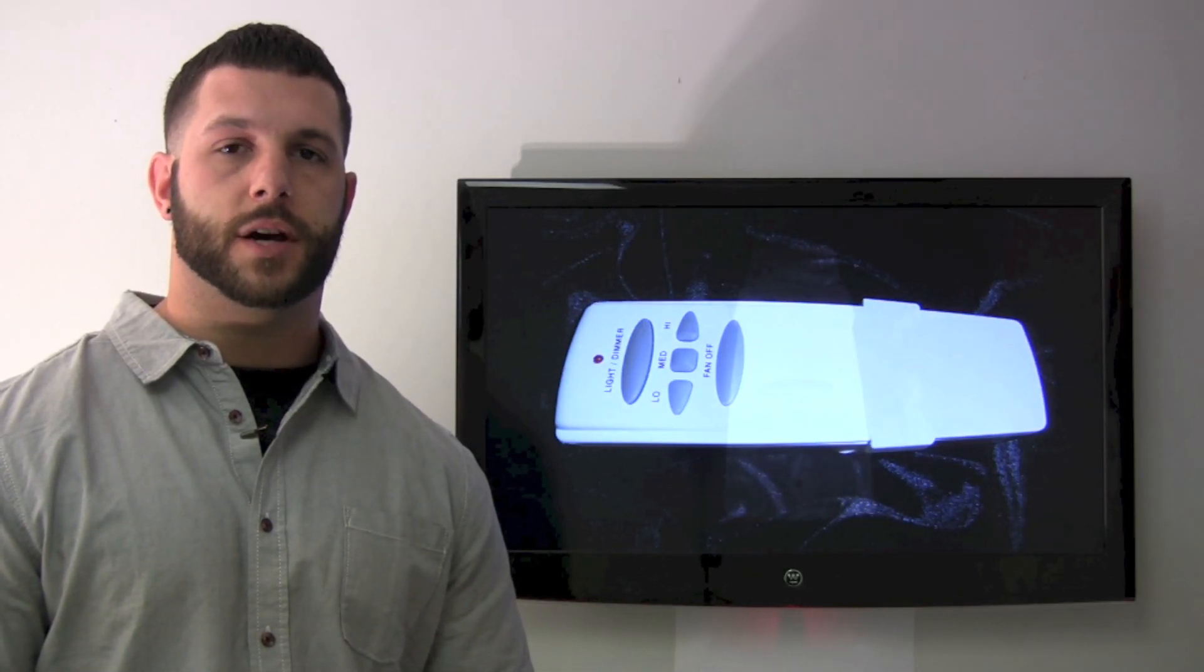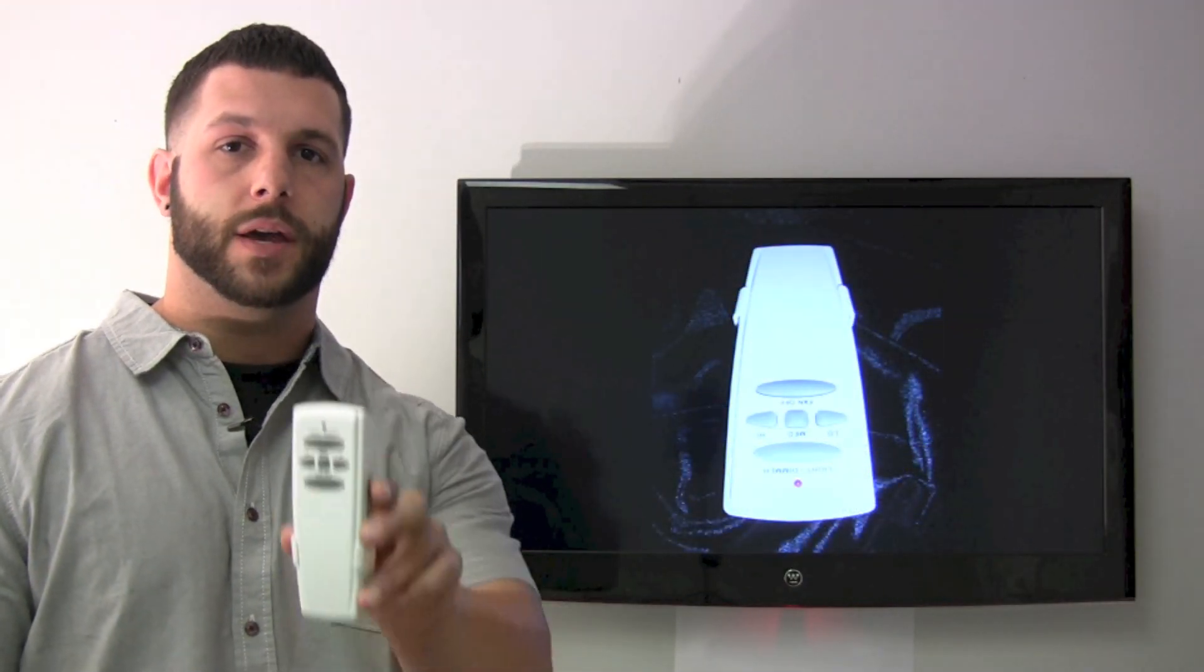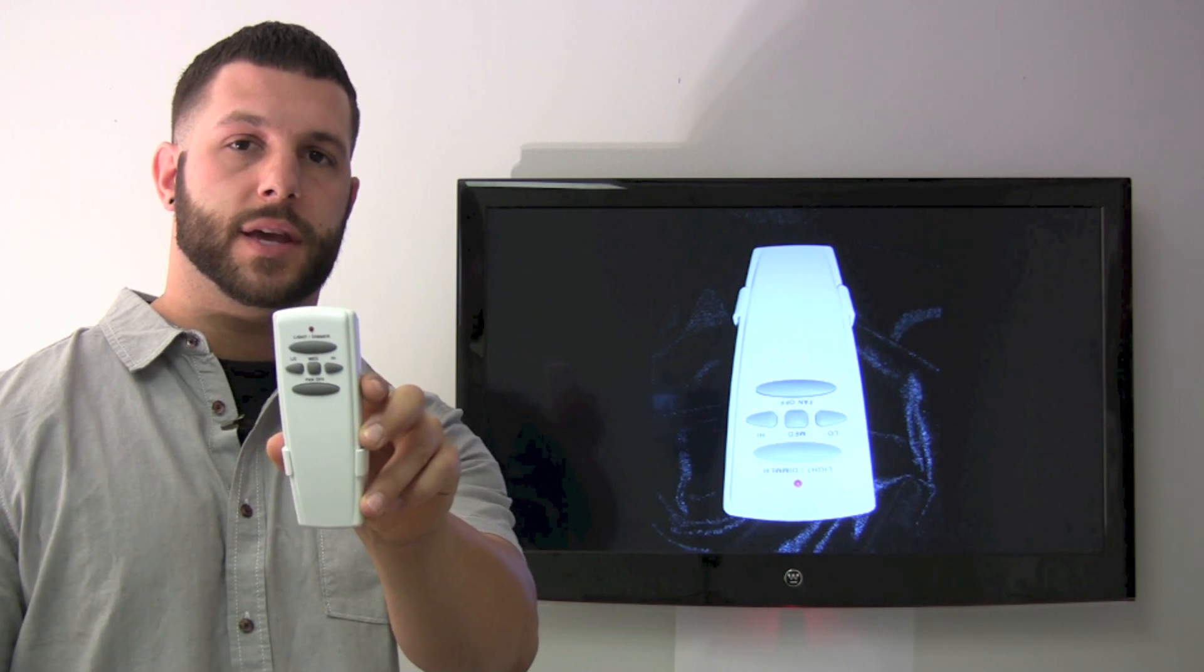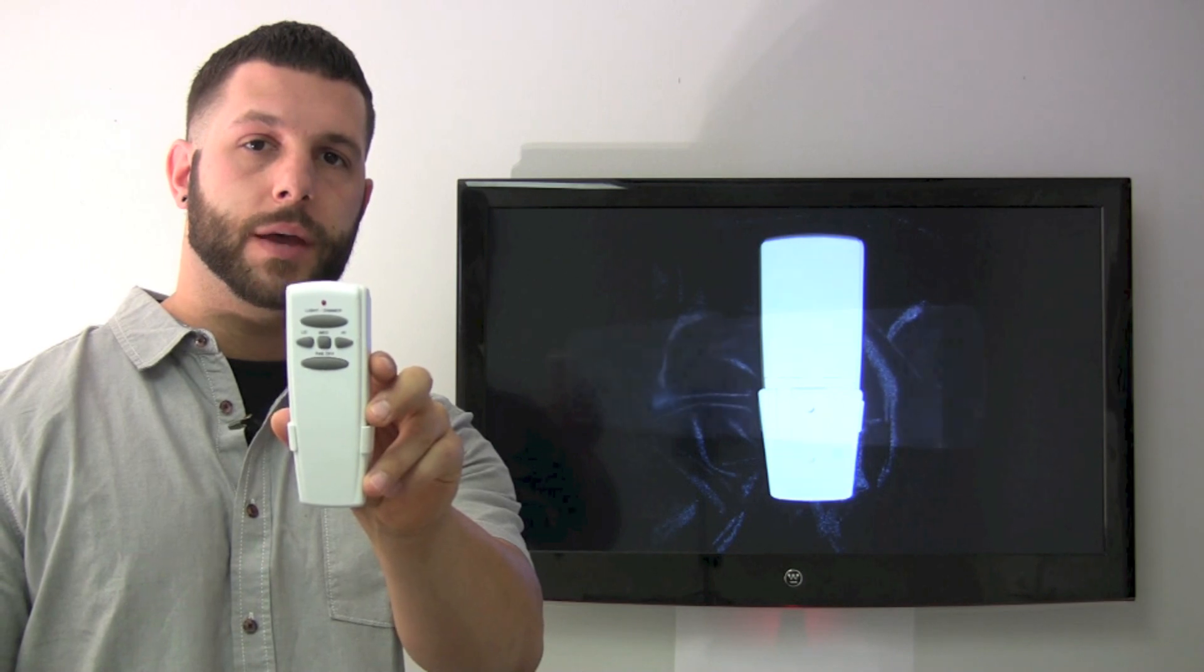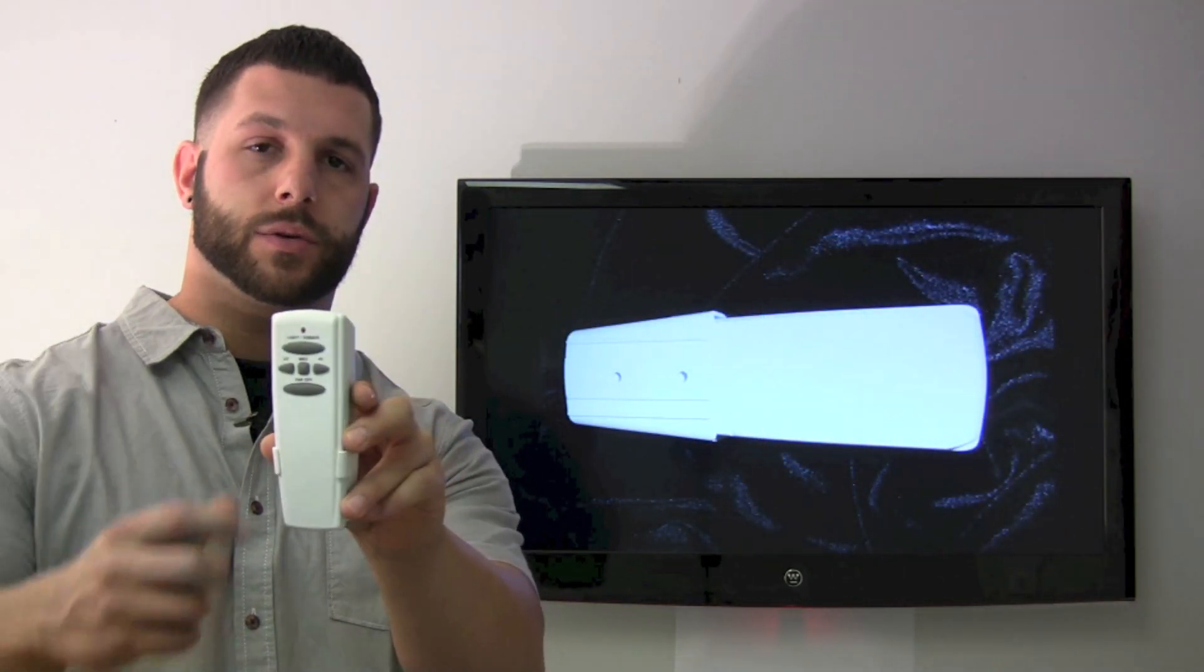This is Timothy coming from ReplacementRemotes.com. Today I'm going to talk about the Hampton Bay UC7078T HD5 remote control. This one is the regular one of the lineup for the Hampton Bays. It does include the wall mount.